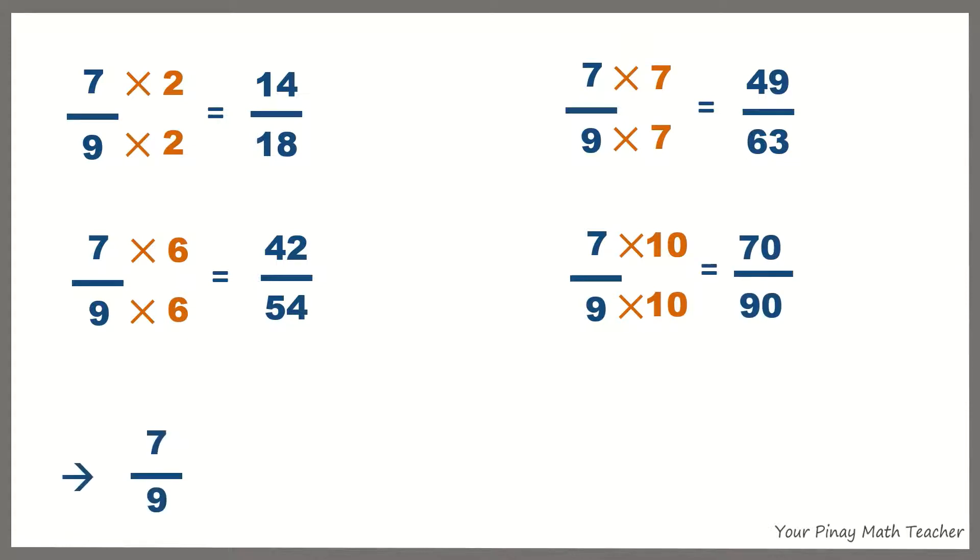So, 7 ninths is equivalent to 14 eighteenths, 42 over 54, 49 over 63, 70 over 90, and so on.